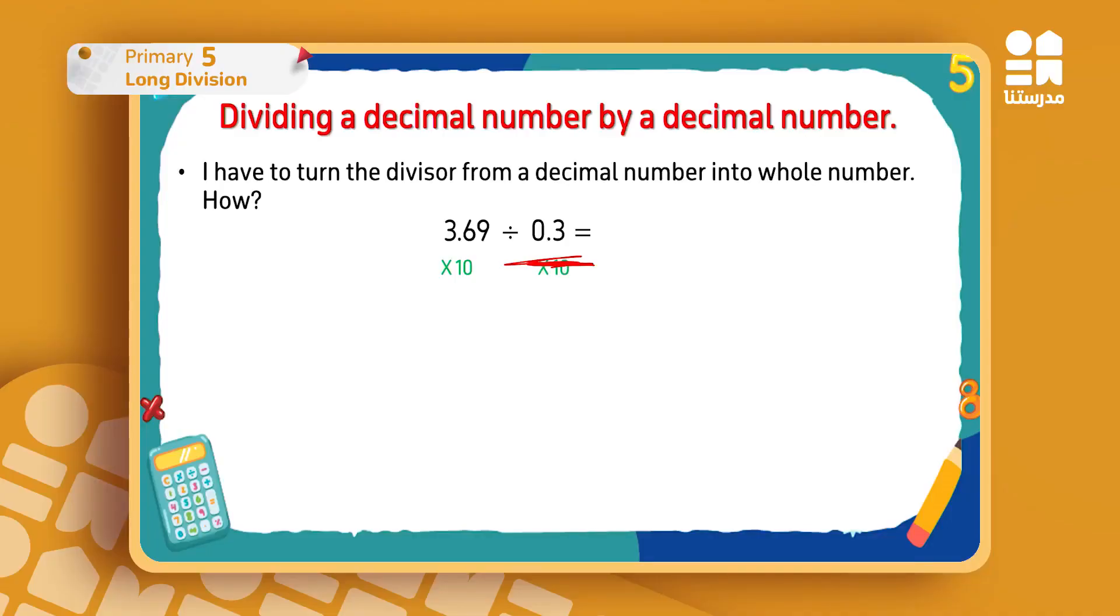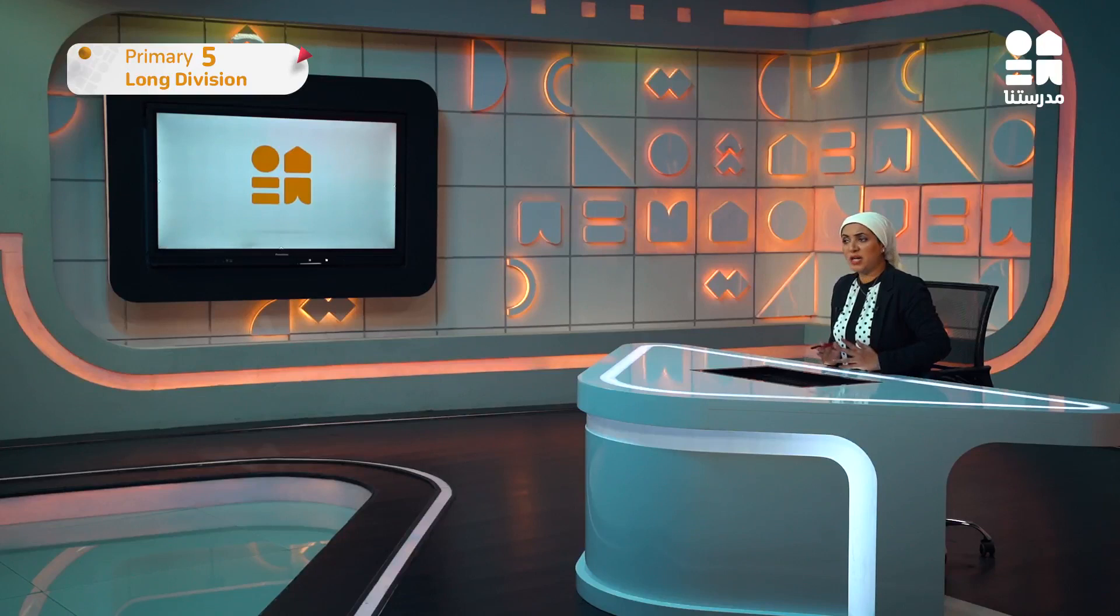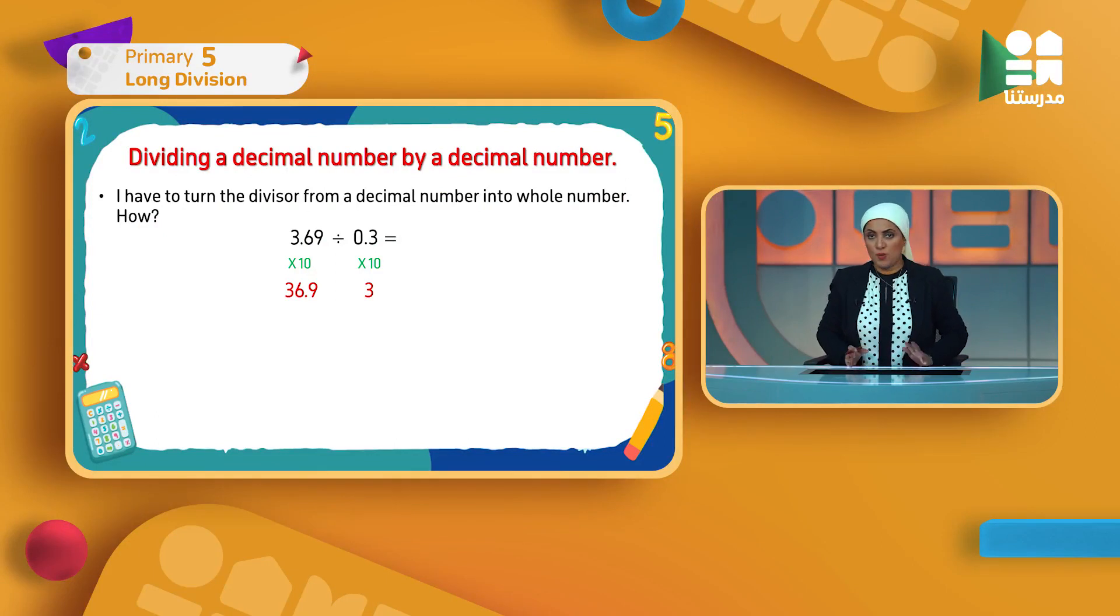I have one digit after the decimal point in the divisor, so I'll multiply by 10. Bravo! I'll multiply by 10. When I multiply by 10 in one of the numbers I have, I must also multiply by 10 in the other number. Anything I do here, I must do here. So 3.69 times 10, because the 10 has one zero, will become 36.9. And divided by 0.3: I will move the decimal point one place because the 10 has one zero, and this is what I want to get rid of the decimal point that's in my divisor. So it becomes 3.